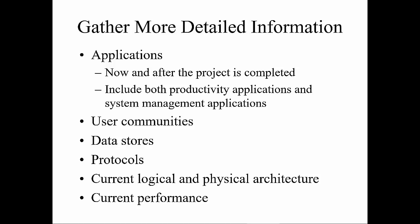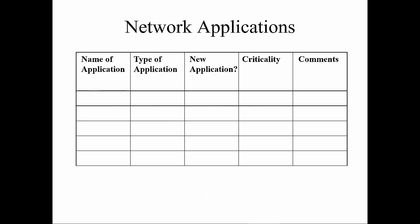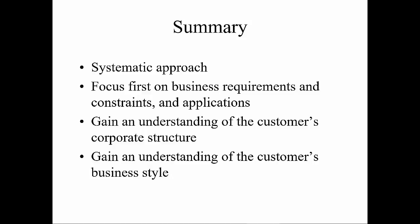So can we have some type of general chart to use? Here is a network applications general chart so that you can record the name of the application, the type of application, whether it's a new application, its level of criticality, whether it's mission critical, what order it needs to come back up in, and room for comments. This should be done for all applications in a network so that if an application ever fails, you have a way to manage and recover it, and you know what has to come back up first. In conclusion, this is all a systematic approach — focus first on business requirements, goals, and objectives, looking at constraints and applications, understanding the customer and their corporate structure, their needs, and their business style.